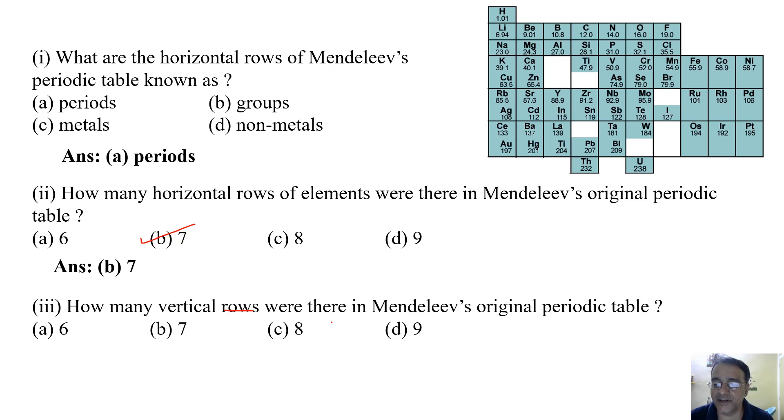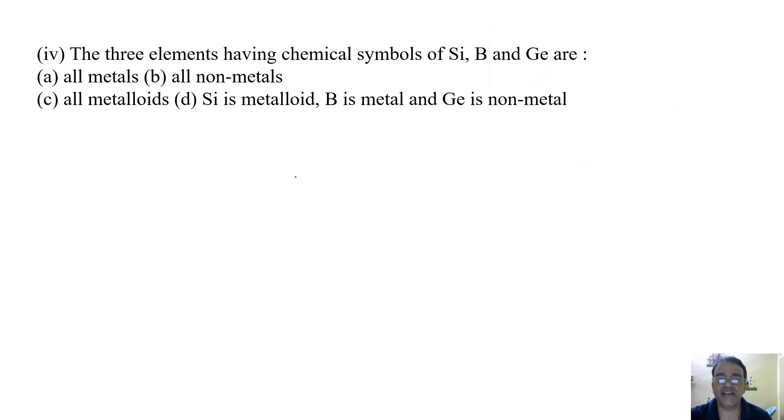Next, the three elements having chemical symbols of silicon, boron, and germanium are: all metals, all non-metals, all metalloids, or silicon is metalloid, B is metal and germanium is non-metal. Which is the correct one? All are metalloids.